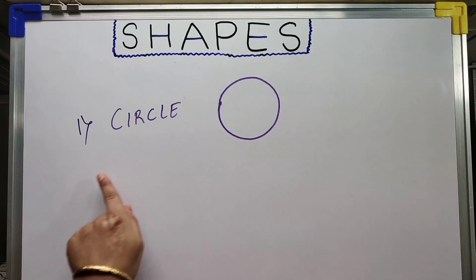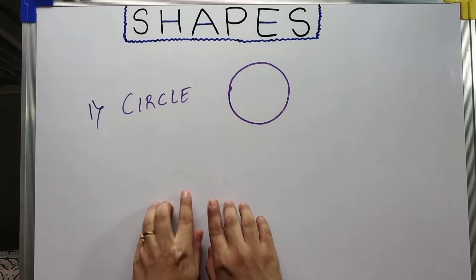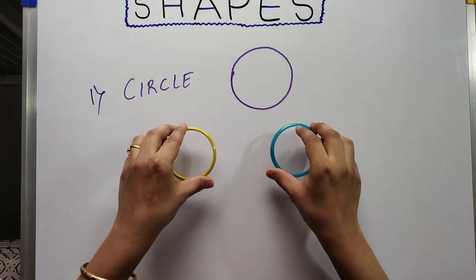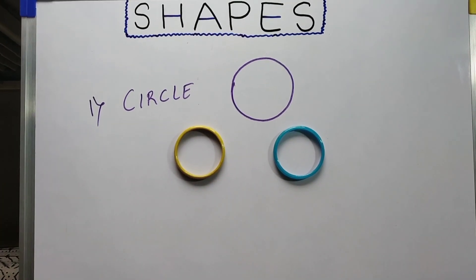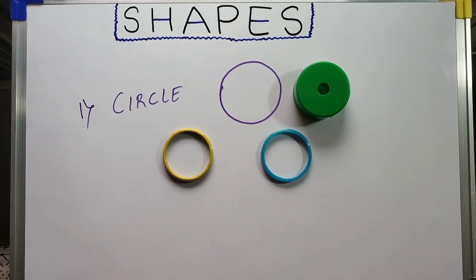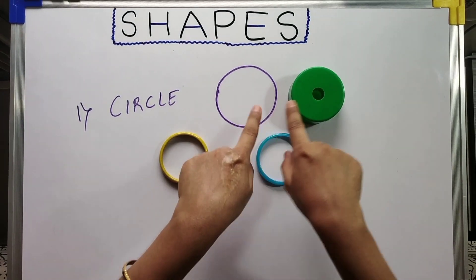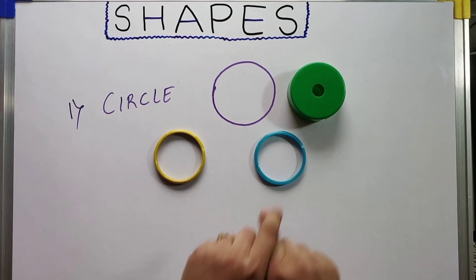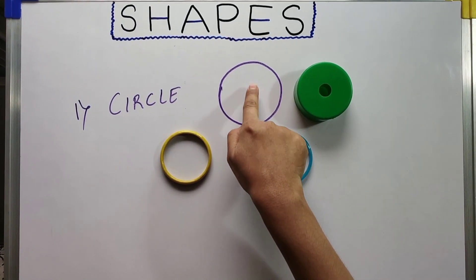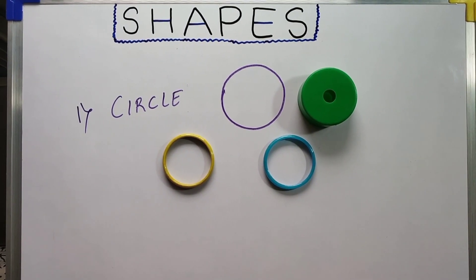Let us consider the circle shape first. We can show children objects similar to a circle — for example, bangles or a wall clock, or any toy which is similar to a circle in shape. This will not only help them in identifying the shape, but they can also relate a particular shape with the object. They can relate the circle shape with that particular object.